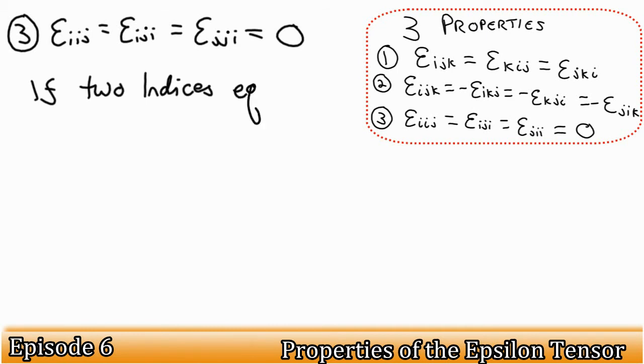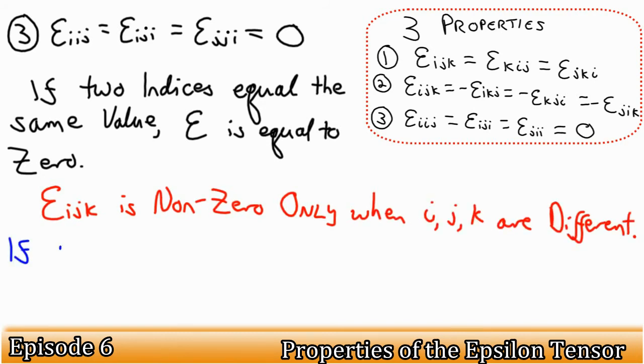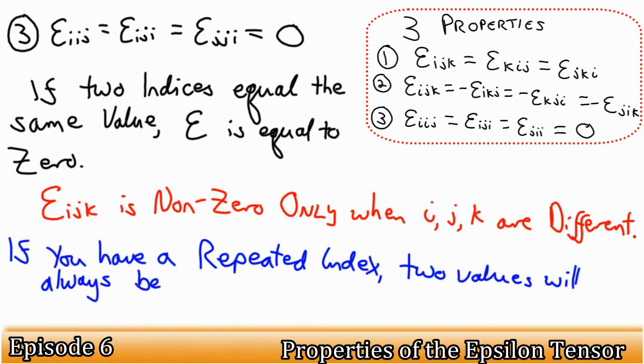Property three just builds upon the definition of an epsilon symbol. If two indices equal the same thing, or in this case are the same thing, then the entire epsilon symbol is equal to zero. This is because epsilon i, j, k is only non-zero when i, j, and k have different values. If we have two instances of i, for example, then these two values will always be the same. This is because you have a repeated index.